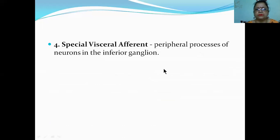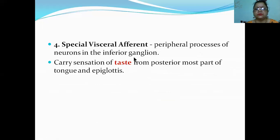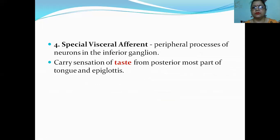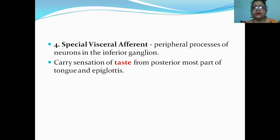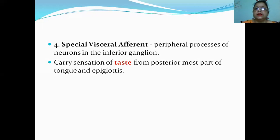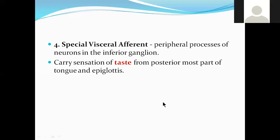Now special visceral afferent - this is mainly related to taste. Anterior two-thirds of tongue taste sensation is by chorda tympani, which is a branch of facial but comes to the lingual nerve. Posterior one-third by glossopharyngeal. Posteriormost part by the vagus - that's why it is special visceral afferent.